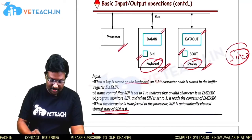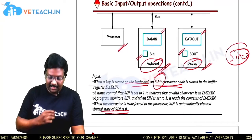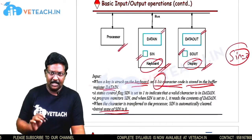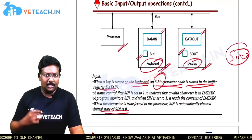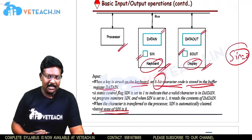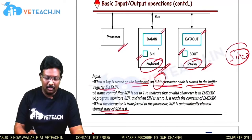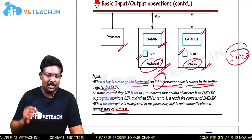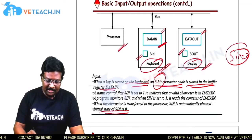When a key is struck on the keyboard, it is converted into 8-bit binary information and stored in the data-in buffer register. The ASCII character of the key pressed is converted into its 8-bit binary equivalent, and that value is stored in the data-in register.